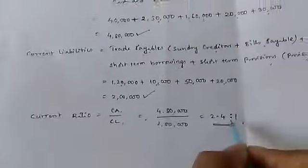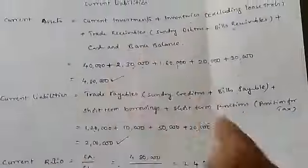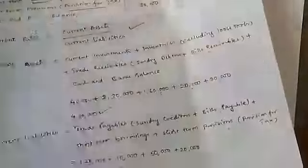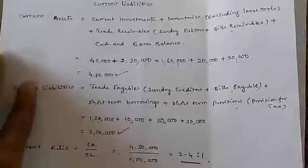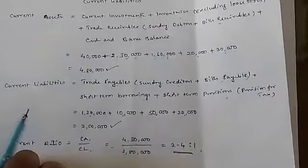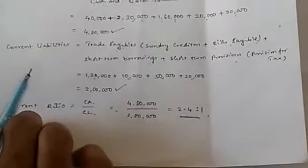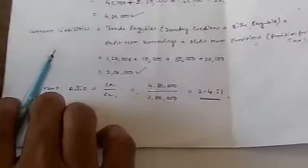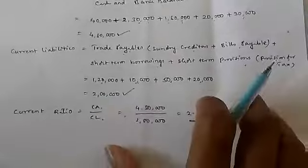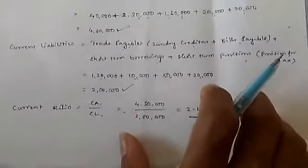The ideal current ratio is 2:1, which means current assets should be at least twice the current liabilities. This company's current ratio is 2.4:1, which exceeds the ideal ratio. Therefore, the short-term financial position of the company is satisfactory and it is in a position to pay its current liabilities on time. Practice more problems like this. Thank you, students.